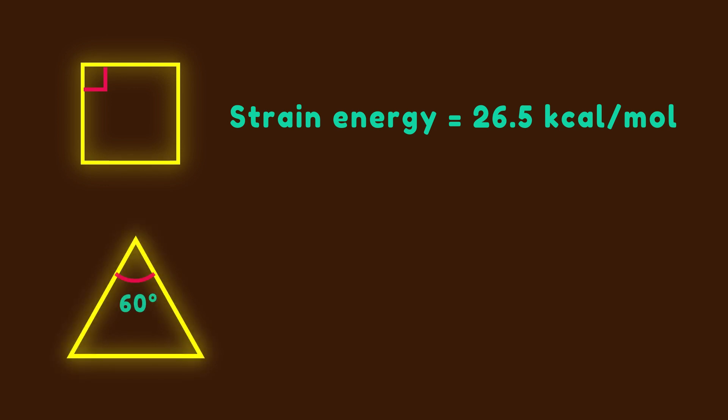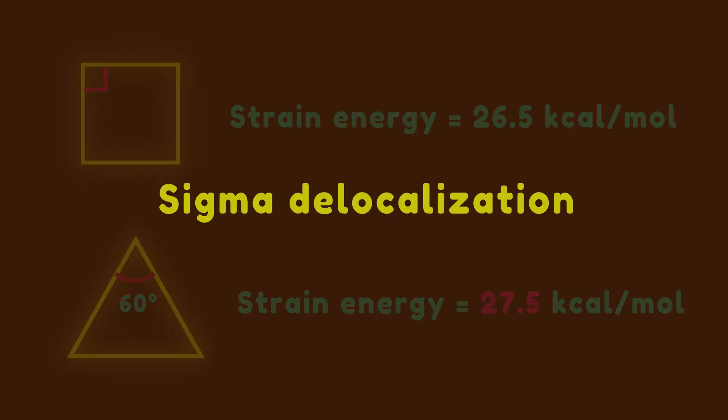Strain energy in cyclobutane with 90-degree bond angle is 26.5 kilocalories per mole. Based on strain theory, we expect a larger strain energy value from cyclopropane because of a smaller bond angle. What's interesting is that strain energy is essentially the same as that of cyclobutane, so there must be a stabilizing factor to rationalize this small energy difference.